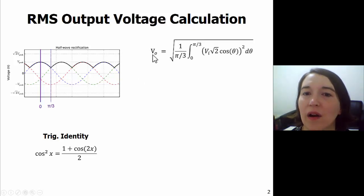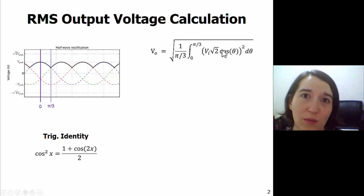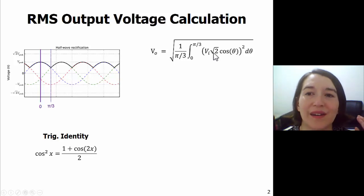So we set up our RMS of our output, the square root, then the average, same expression as before, but this time we're squaring our cosine. So we square this value.